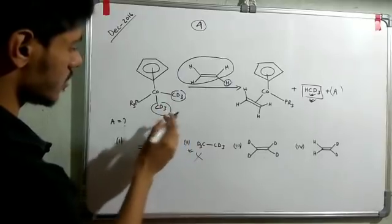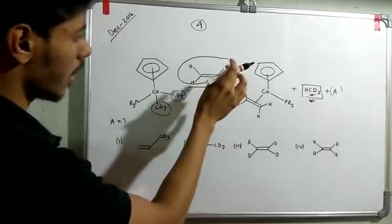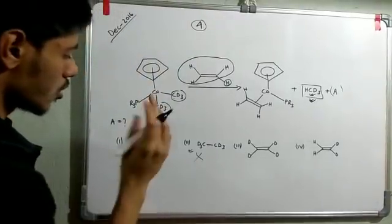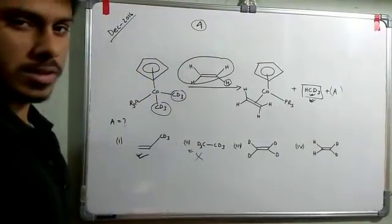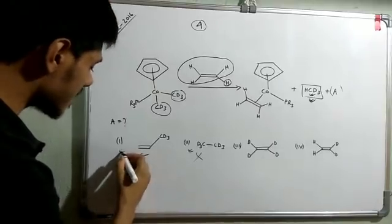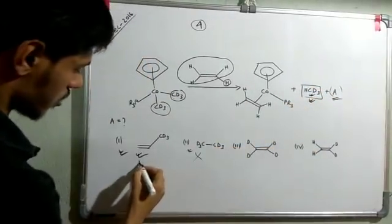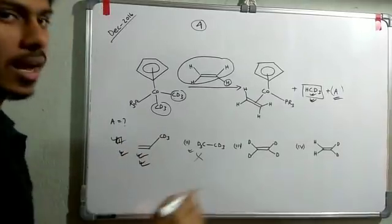Now if this Cd3 connects with this fragment we will get this product. So this product looks most possible, and indeed this is the correct answer. The structure of A is this, so option 1 is the correct answer.